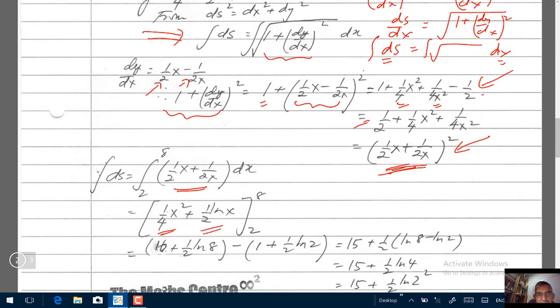Next, you need to plug in 8. So 8 squared is 64. Divide by 4 is 16. And then I have a half log 8. Then 2 squared divided by 4 is 1. And then I have a half log 2. Not hard for you. Just do it slowly. Let's see. I have 16 minus 1 is 15. And then I have a half log 8 minus half log 2. That's what you see here.